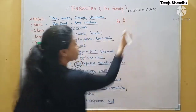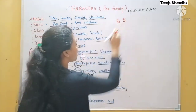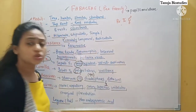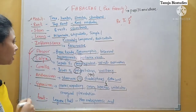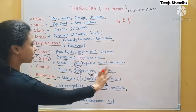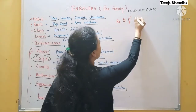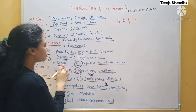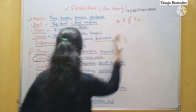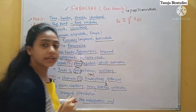I will show zygomorphic like this. After that, it is bisexual, so I will denote both male and female present. Here we have hypogynous and pentamerous. For calyx — symbol K — five sepals are present, and they are gamosepalous, so I will show them with a bracket.